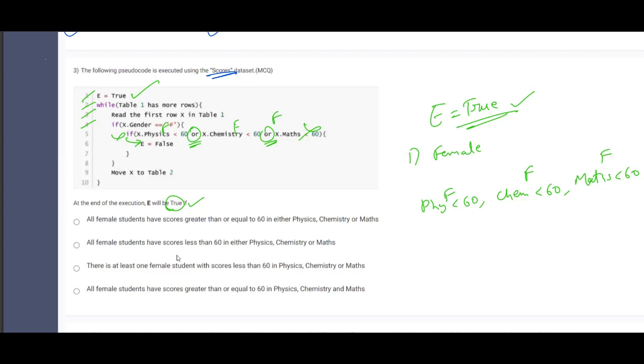So when will E remain to be true? Only if this condition is not satisfied. That is, if all the three are false: physics should be greater than or equal to 60, chemistry should be greater than or equal to 60, and math should be greater than or equal to 60. In that case E will remain true. Therefore, option D is the correct answer because it is not using the word 'either' which has been used in option A.